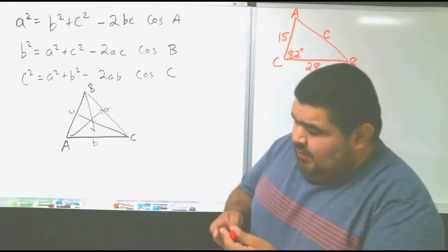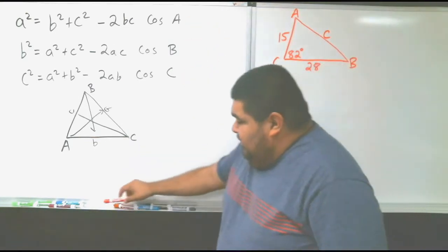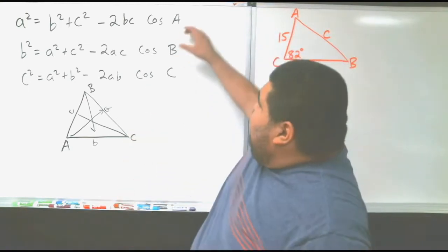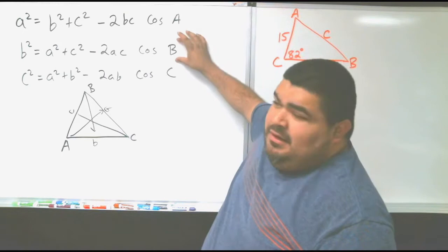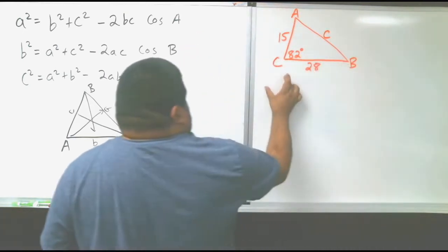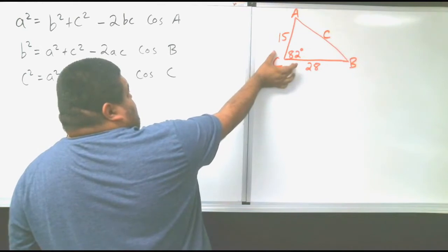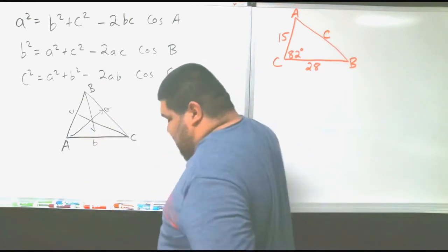So which one of these three equations we're going to use you might ask. Keep in mind, if it gives you angle A, then you're going to use this one. If it gives you angle B, and if it gives you angle C. So by looking at our triangle, it gives us angle C. So that means we're going to use this bottom one.